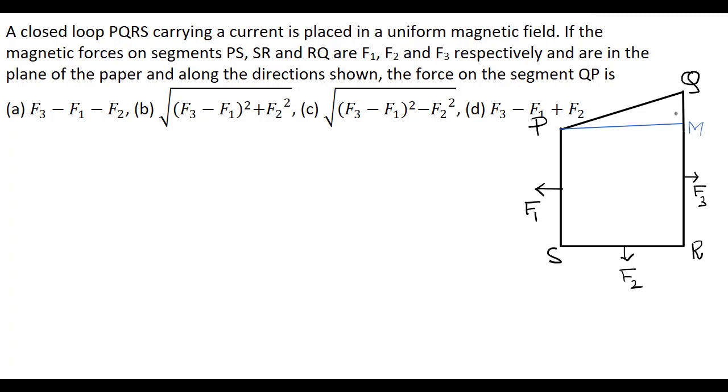So the force acting on this segment QM is equal to F3, the total force acting on QR, minus the force acting on segment MR, that is PS. So the force acting on segment QM is F3 minus F1.